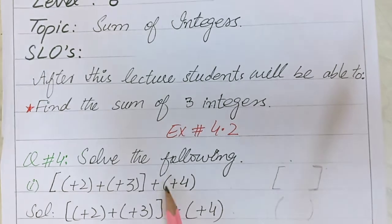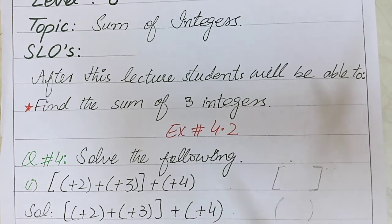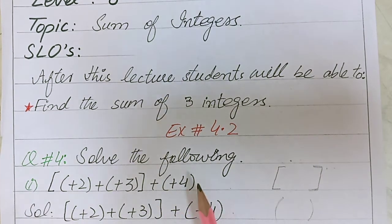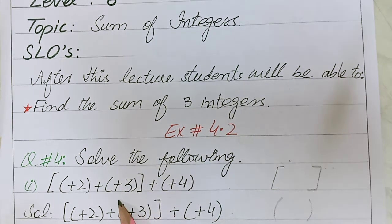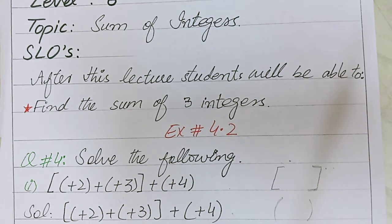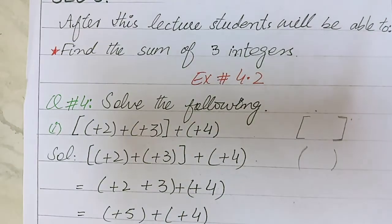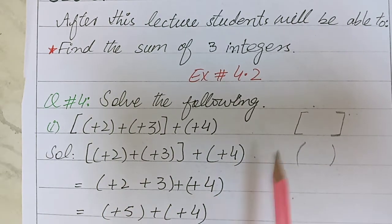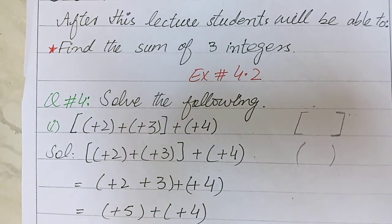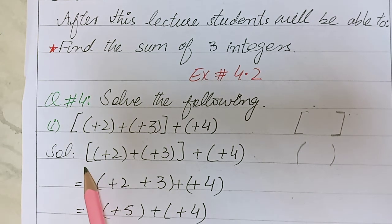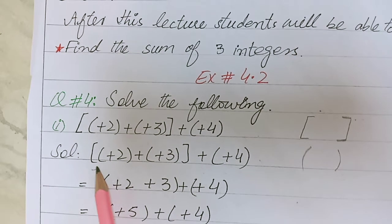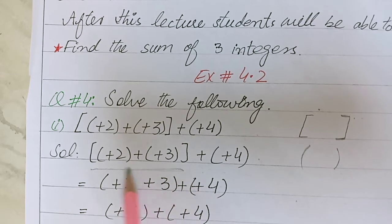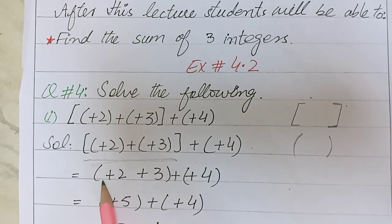When you have square brackets with three integers, first of all we solve the integers in round brackets. Let's start the solution. Write the question again. This bracket is showing that we have to solve this first.